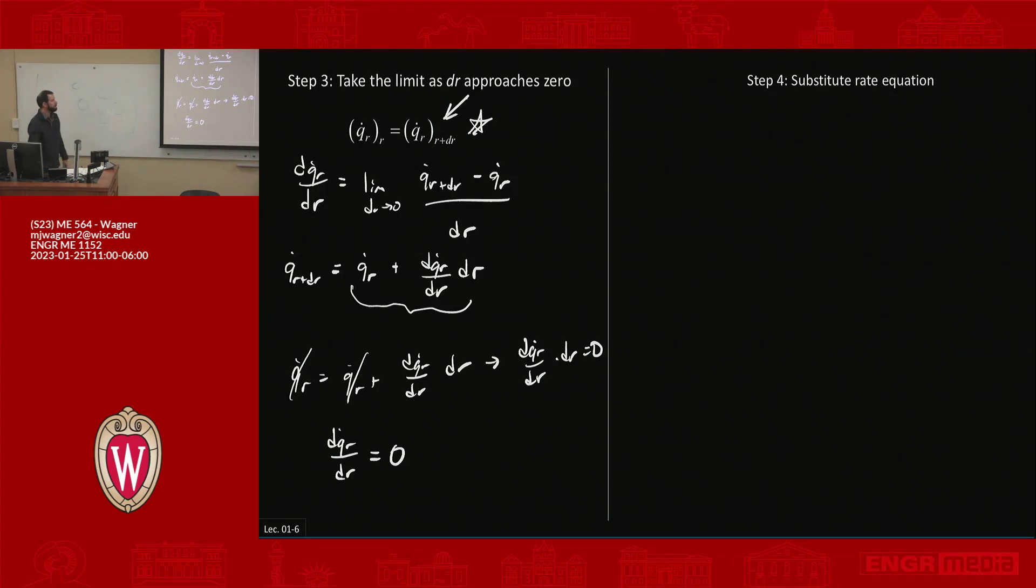So this is, again, physically, it's just saying the amount of heat that's transferred in the R direction is not a function of position. It doesn't change. What's coming in is equal to what's going out. So we'll leave it there and finish up the rest next time. Thanks, everyone.